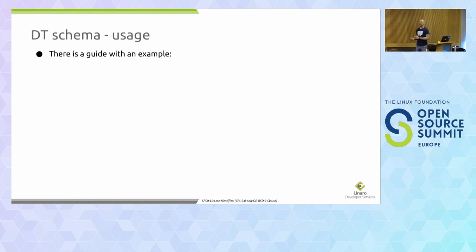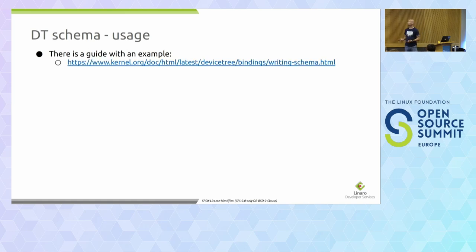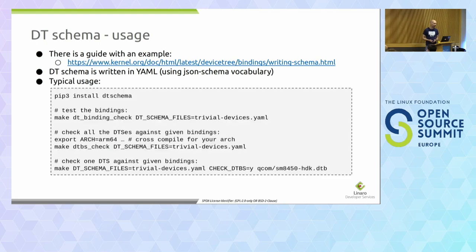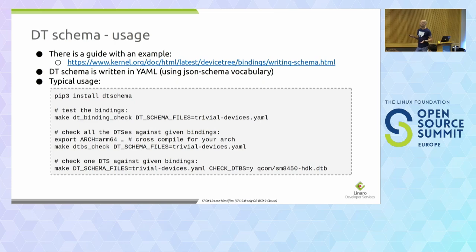The DT schema — we have another doc explaining how to use it. It's very straightforward. The DT schema is written in YAML, a pretty nice easygoing language. You install it with a Python package and then run one command: make dt_binding_check. You can test your bindings against the meta schema and limit which bindings should be tested. You can test all your DTBs against one binding file or several binding files or even all of them.